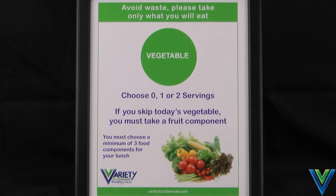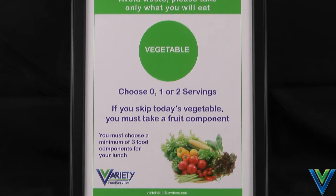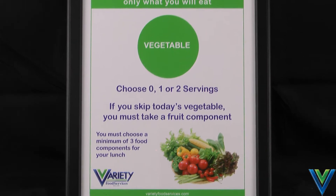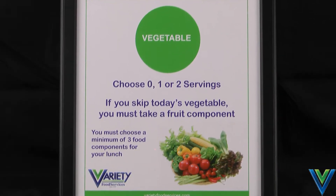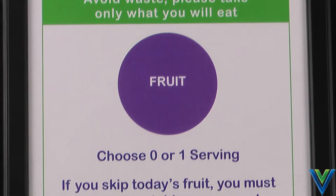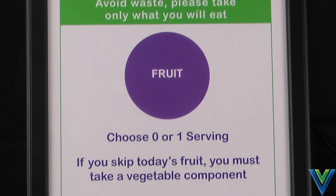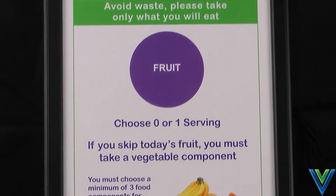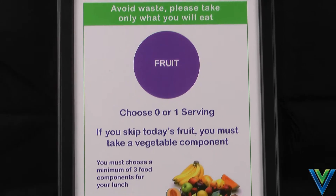Third is the vegetable component. Students can have up to two servings of vegetables. If the student chooses no vegetables, then they must take a serving of fruit to constitute a reimbursable meal. Fourth is fruit, which can be whole, canned, or juice. If the student chooses no fruit, then they must take at least one serving of vegetables.